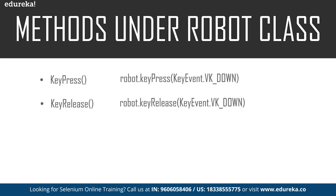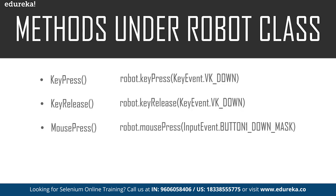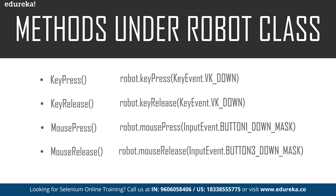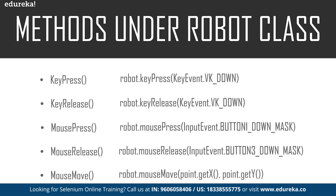Now let's take a look at the methods used to handle the mouse functions. We have the mouse press method, which is used to press the left button of the mouse. Then we have the mouse release method, which is used to release the pressed button of the mouse. Last, we have the mouse move method, which moves the mouse pointer to the X and Y coordinates. The coordinates of the elements are passed into this mouse move method — the command goes something like robot.mouseMove() specifying the X and Y axis coordinates.